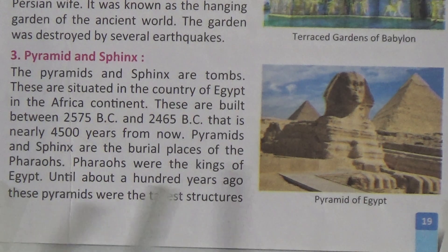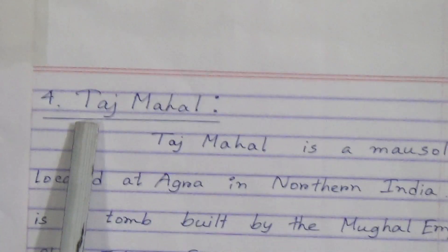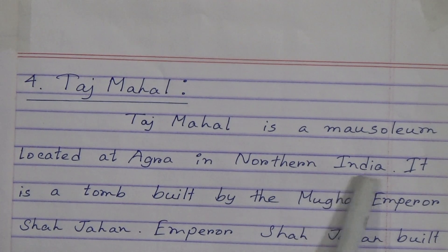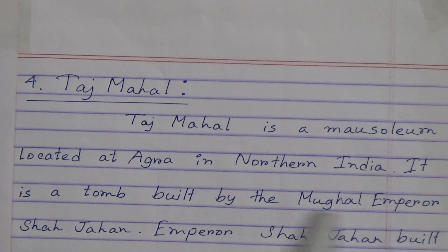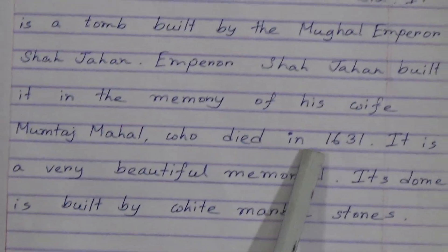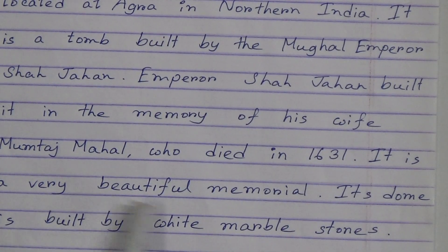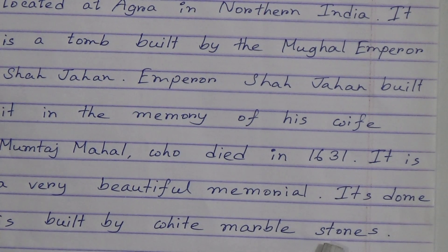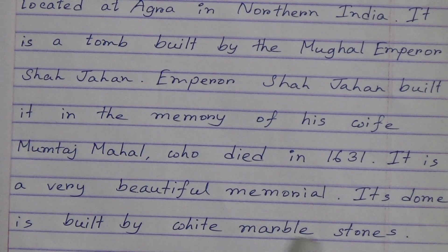The fourth place is the Taj Mahal. The Taj Mahal is a mausoleum located in Agra, in northern India. It is a tomb built by the Mughal emperor Shah Jahan in memory of his wife Mumtaz Mahal, who died in 1631. It is a very beautiful memorial, and its dome is built with white marble stones.